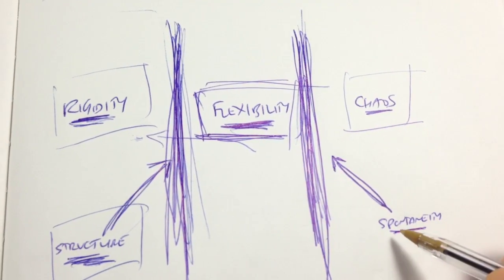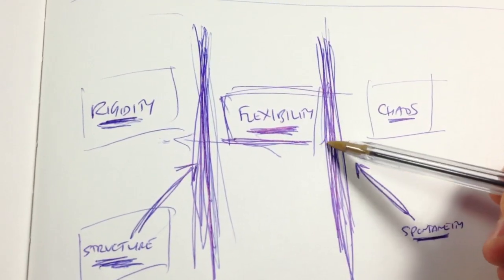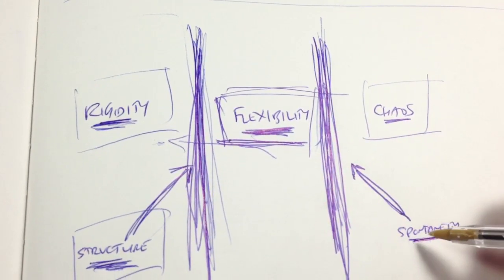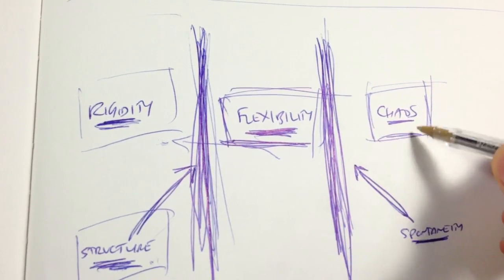Now, the other side is spontaneity. You need spontaneity. That's one of the banks that river flows through. But if you have too much spontaneity, if you have no structure at all, you fall into chaos.